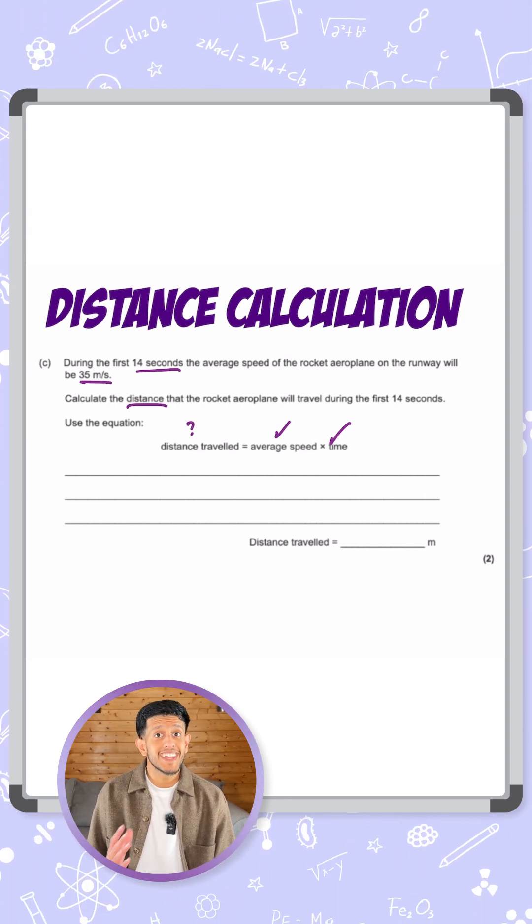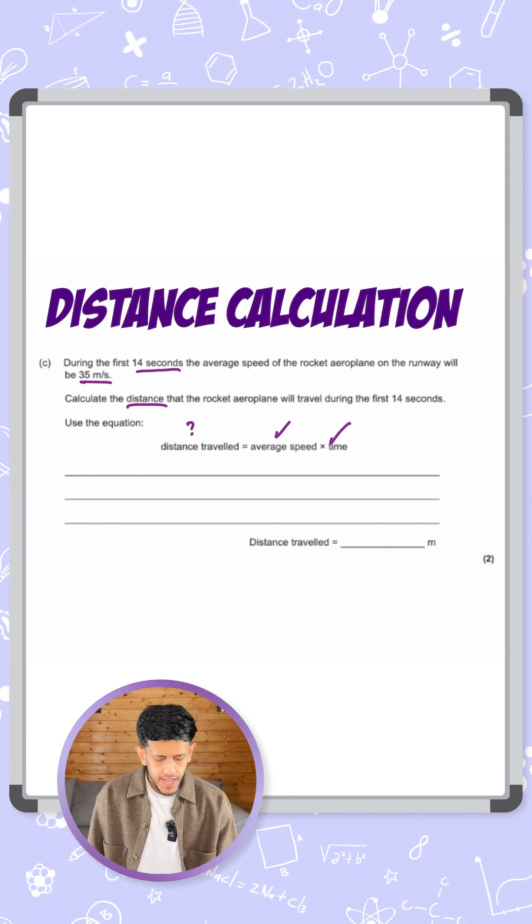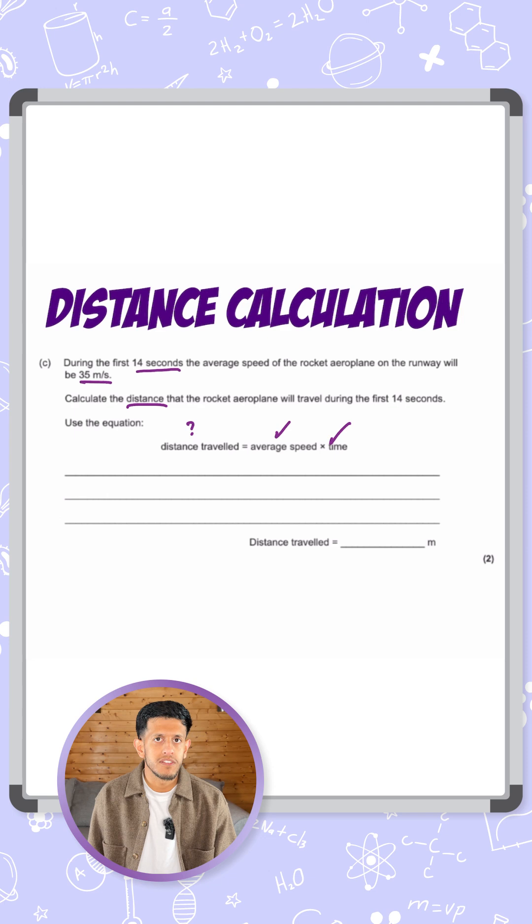So the equation isn't exactly the way that we want it. Are the units in their standard form? Seconds for time, that's correct. And then meters per second for speed, that is also correct.